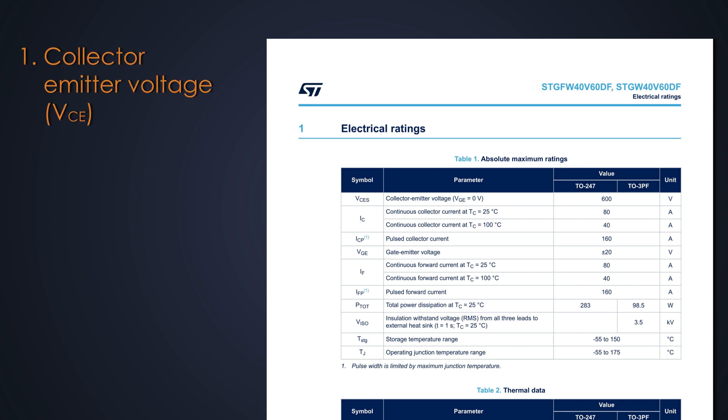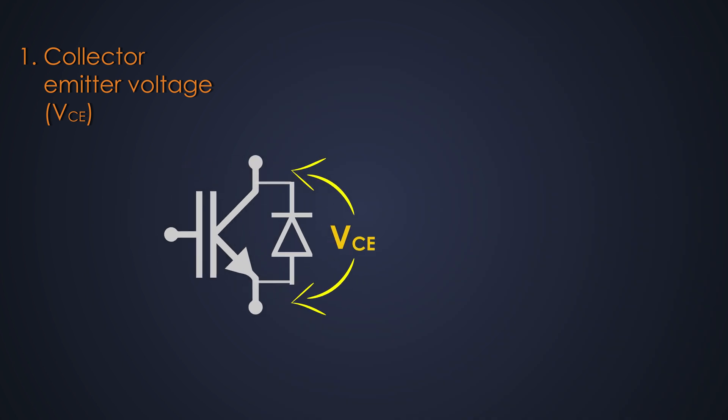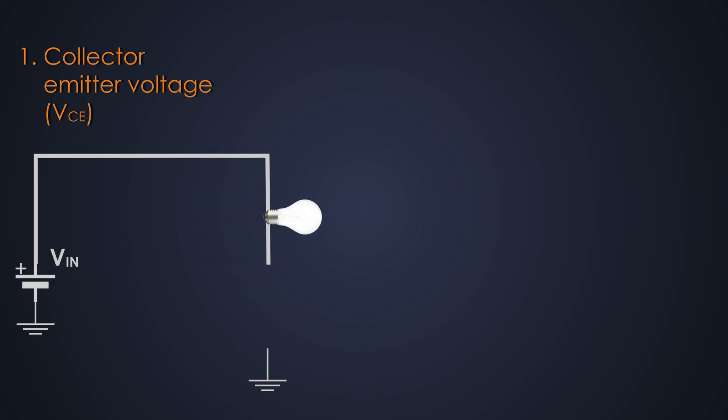First, we'll start with the collector emitter voltage. It is similar to the drain-to-source breakdown voltage of the MOSFET. This is the maximum allowable voltage between the collector and the emitter, when there is no gate voltage. If the voltage applied to IGBT exceeds this voltage, then it might destroy the IGBT. We should choose IGBTs with a proper collector to emitter voltage, which will be sufficiently higher than the voltage at which we'll be using them. This rating denotes that it can block this voltage without damaging itself when it is off. But it comes with some conditions and dependency.